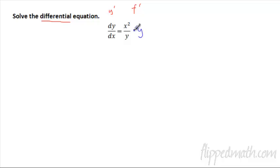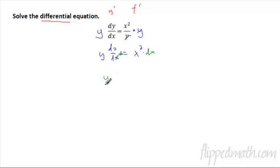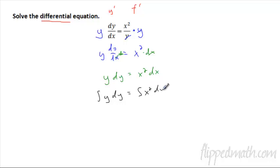I want to get my y's together, so I'm going to times this side by y. Whatever you do one side, you've got to do the other. So we've got dy/dx. And here's the weird part — I can split up my derivative. I'm going to times this side by dx, so they're gone. I'm looking at y dy, x squared dx. What's cool about this is now we can integrate — on this side integrating with respect to y, and on the other side integrating with respect to x.